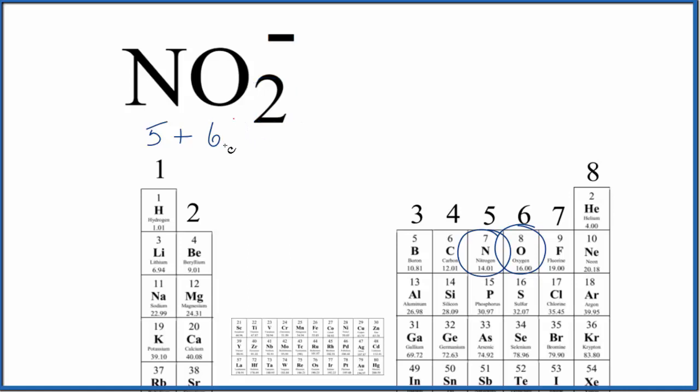We have two of those oxygen atoms plus the negative here. That means we have an extra negative charge. That's an extra valence electron. So we add one. When we do that, we get 18 total valence electrons for the NO2 minus Lewis structure.